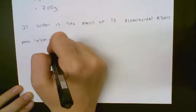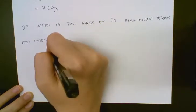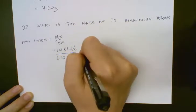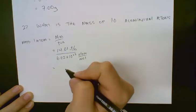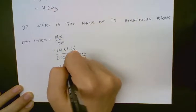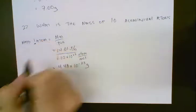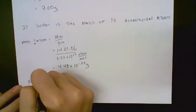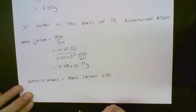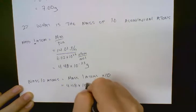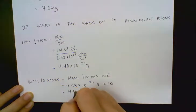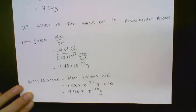If we look up the mass of aluminum on the periodic table, it is 26.98 grams per mole, and we know there are 6.02 times 10 to the 23 atoms in every mole. If you divide that through, you get 4.48 times 10 to the negative 23 grams — that's the mass of one atom. To get the mass of 10 atoms, we just take the mass of one atom and multiply by 10, giving us 4.48 times 10 to the negative 22 grams.